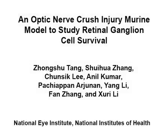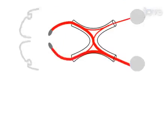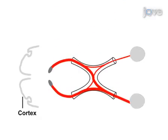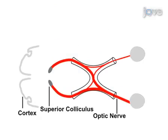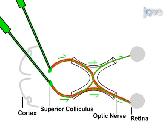This procedure demonstrates the optic nerve crush injury and subsequent analysis of retinal ganglion cell survival in a mouse model. This is achieved by injection of a fluorescent dye into the superior colliculus on day one. The dye is retrogradely transported to the retinal ganglion cells to label this cell population.